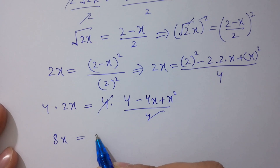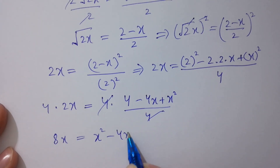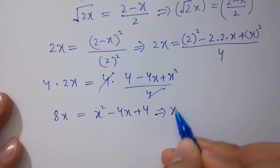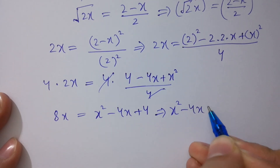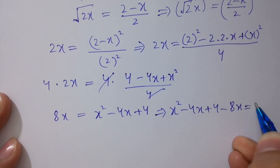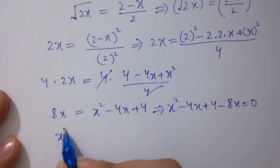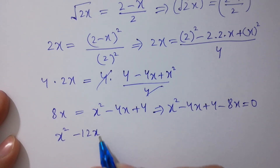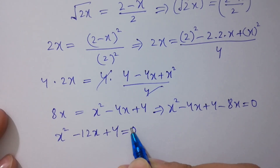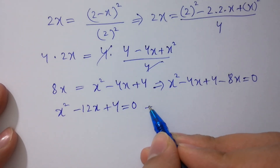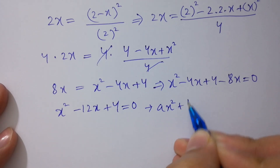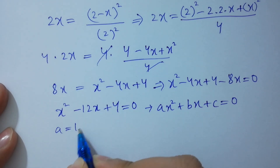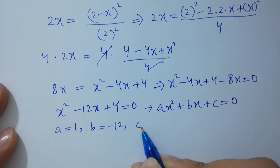Finally we get x squared minus 4x plus 4 minus 8x equals 0, which gives x squared minus 12x plus 4 equals 0. This is a quadratic equation of the form ax squared plus bx plus c equals 0, where a equals 1, b equals minus 12, and c equals 4.